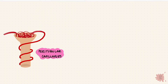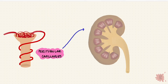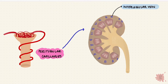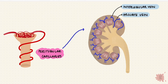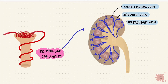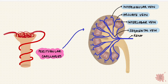The peritubular capillaries then drain into the venous system, and now the pathway goes in reverse. We start with the interlobular veins, followed by the arcuate veins, then the interlobar veins and the segmental veins. The segmental veins drain into the renal vein, which exits at the hilum of the kidney and drains into the inferior vena cava.